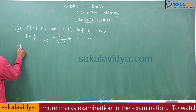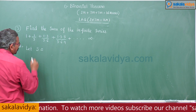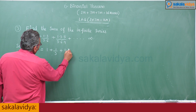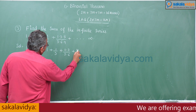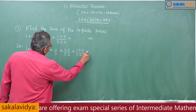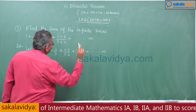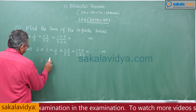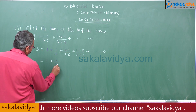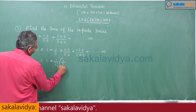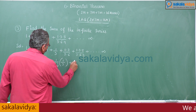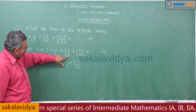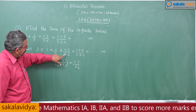Let S equal the series: 1 + 1/3 + (1·3)/(3·6) + (1·3·5)/(3·6·9) + ... up to infinity. Now we rewrite this in another form: 1 + (1/1!) · (1/3) + (1·3)/(2!) · (1/3)² — note that 2 factorial is 2, so 3·6 divided gives 1/9, which equals (1/3)².